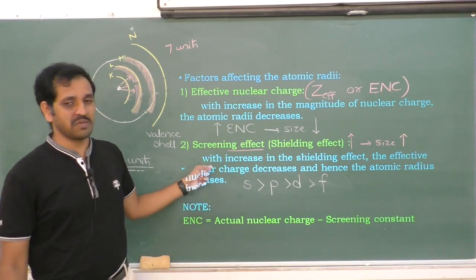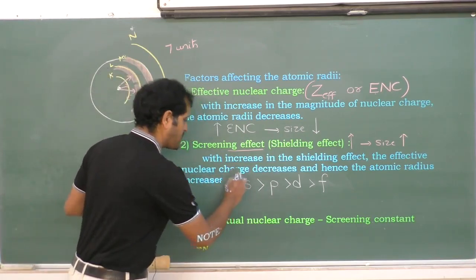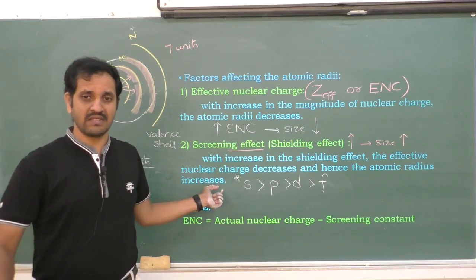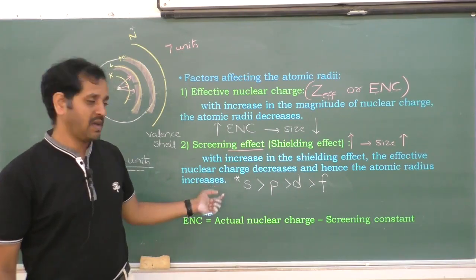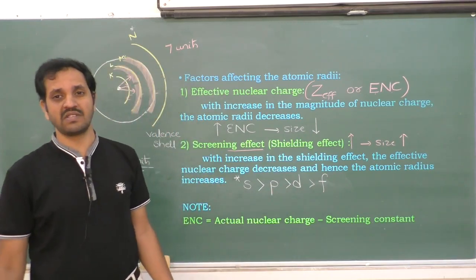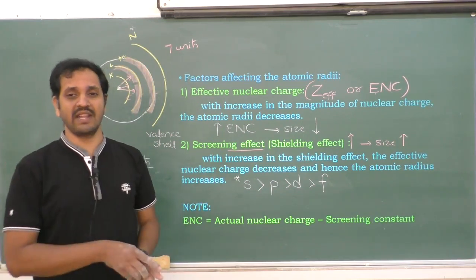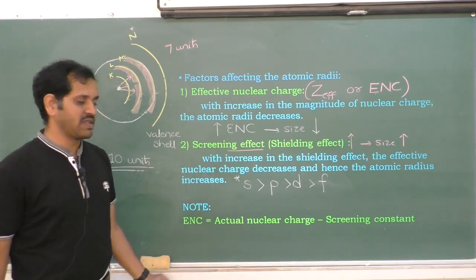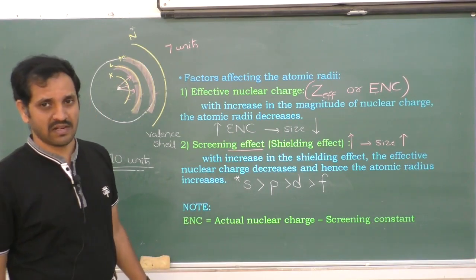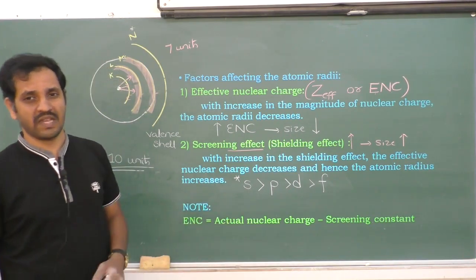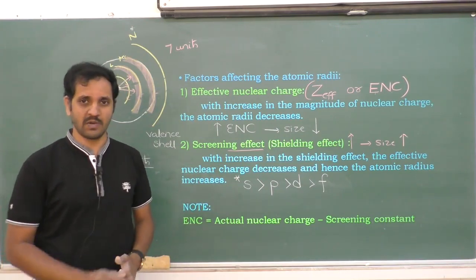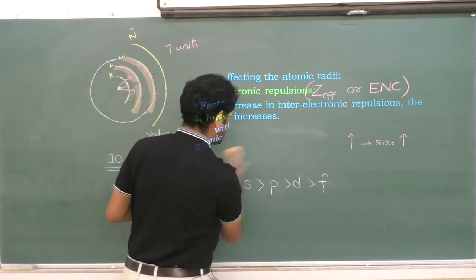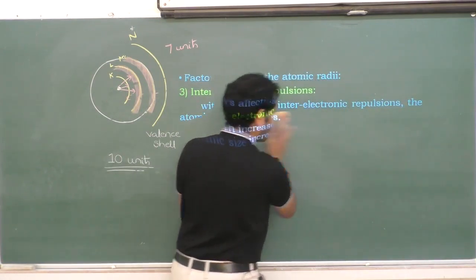The order of shielding effect: electrons in s orbitals give maximum shielding effect; electrons in f orbitals give ineffective (negligible) shielding effect. The third factor influencing atomic radii is inter-electronic repulsions.